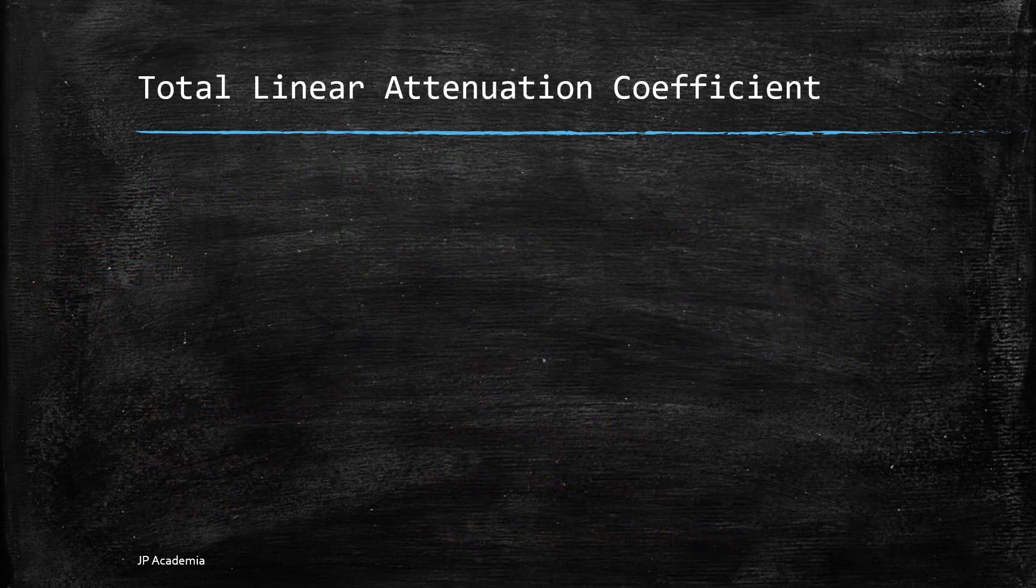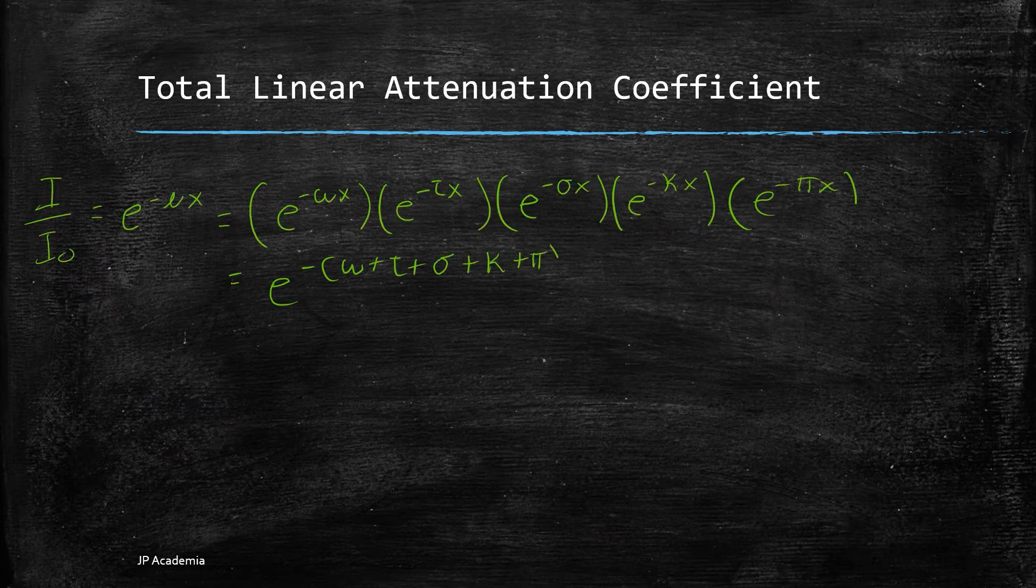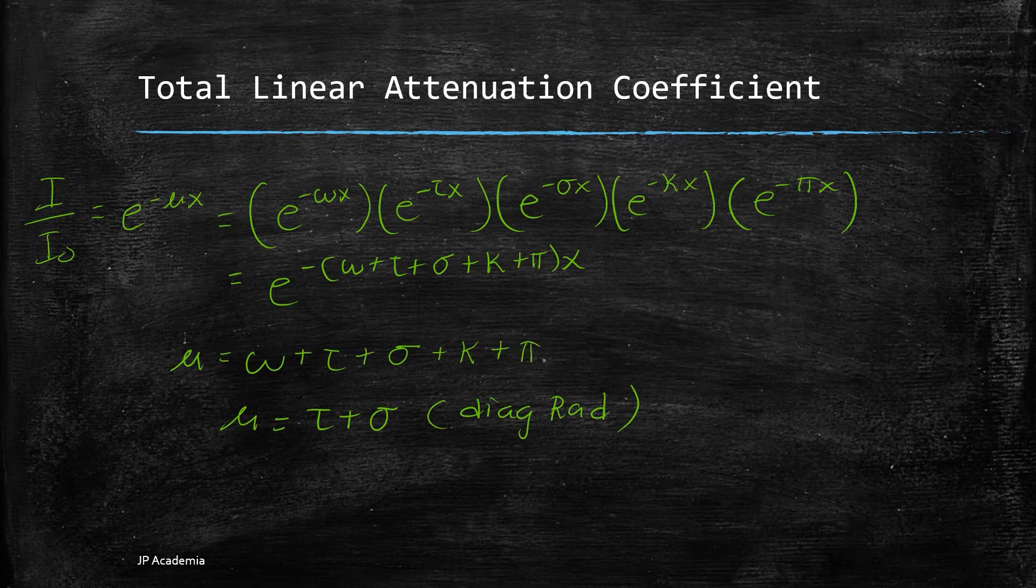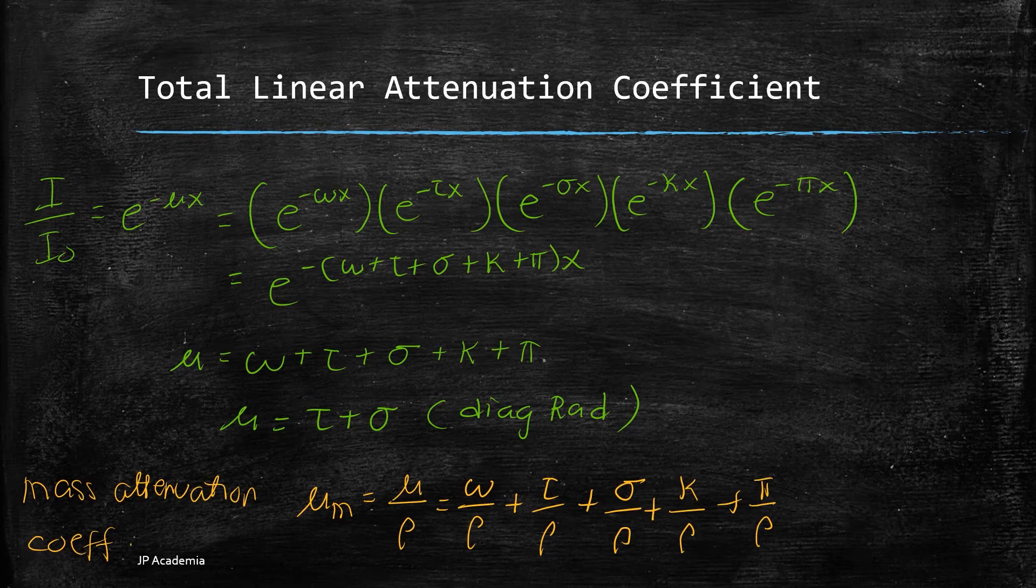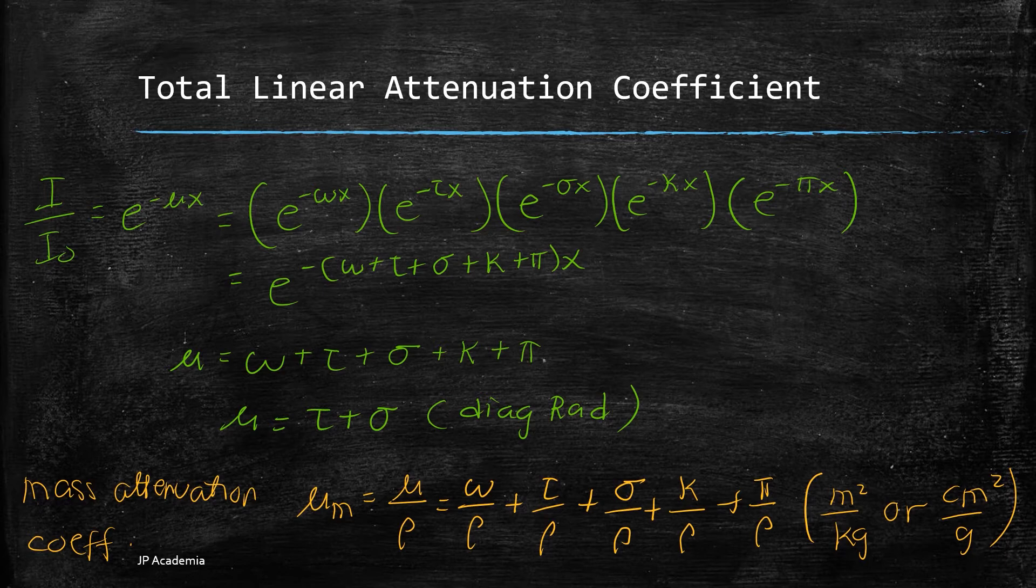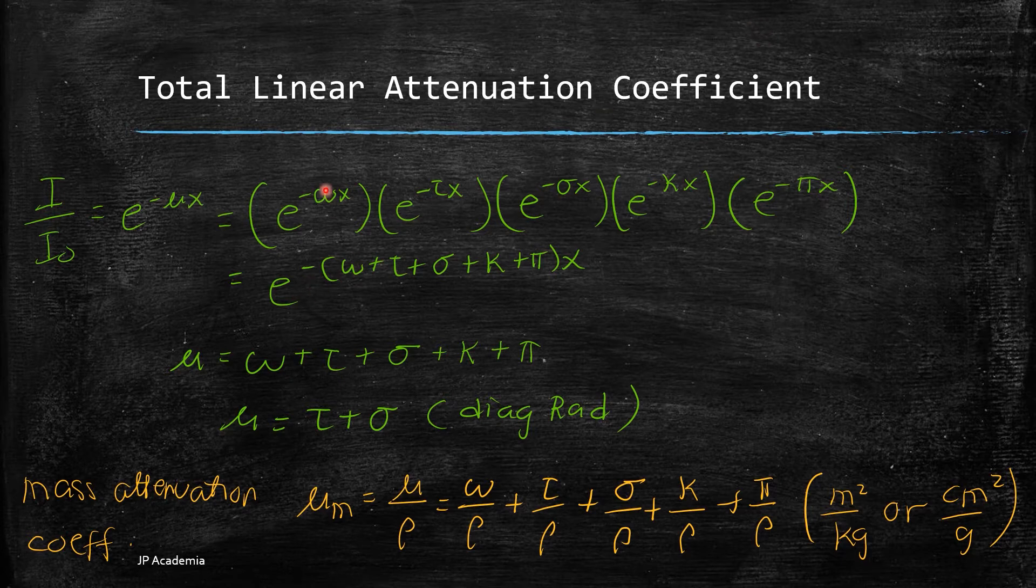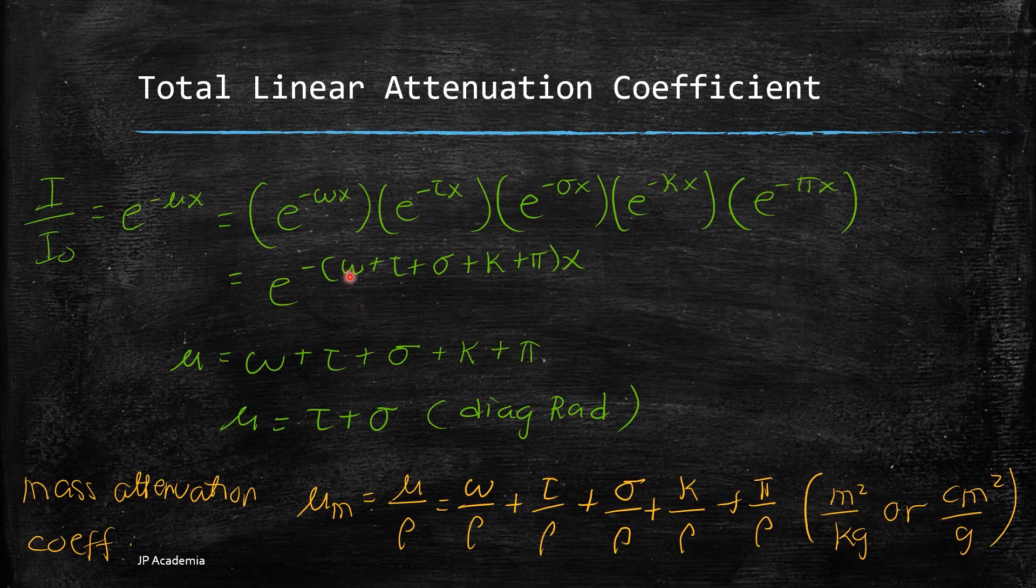The exponential function or the probability that the photon traverses a certain thickness x without interacting can be expressed as the product of probabilities that the photon does not interact through any five interaction processes. We have the following interaction cross section here. So I will just bring out my laser pointer. We have first the omega, this one, which refers to the coherent or Rayleigh scattering. Then we have the tau for photoelectric absorption.